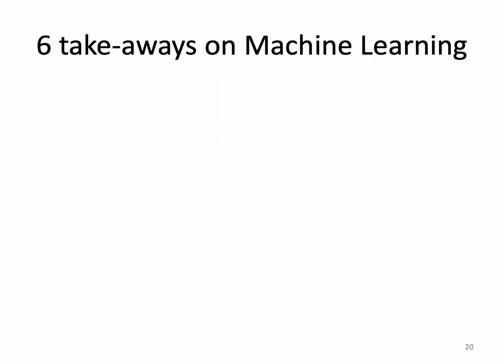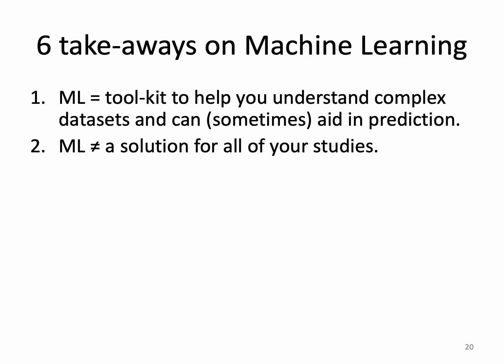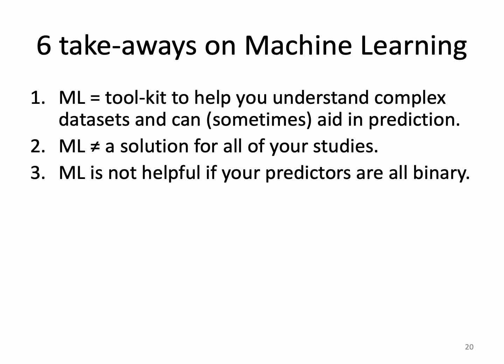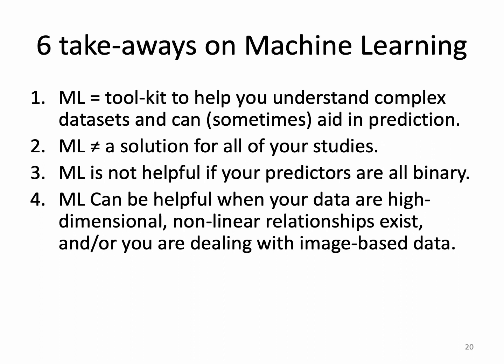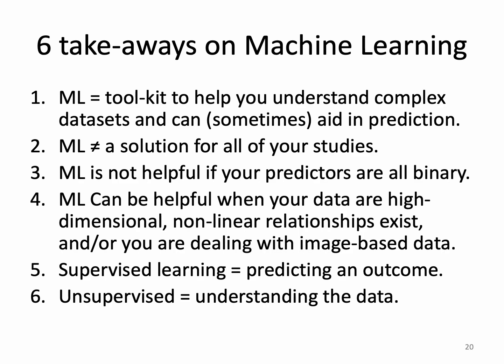Here are a few takeaway points. Machine learning is a toolkit that helps you understand complex datasets and sometimes aids in prediction — it's not a solution for all types of studies. It often isn't helpful if all your variables are predominantly binary; good old-fashioned regression can handle that. Machine learning is helpful when data are high dimensional, when there are complex nonlinear relationships, or when dealing with image-based data. Supervised learning is applied when you want to predict an outcome; unsupervised learning is about understanding the data.